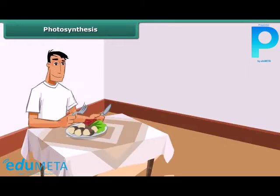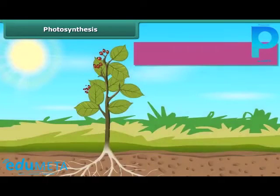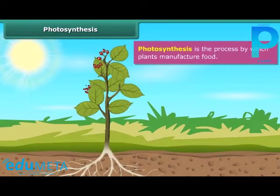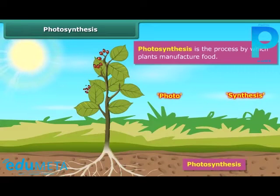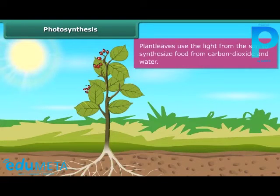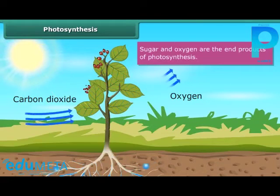Just as human beings need food to survive, plants also require food to live. Photosynthesis is the process by which plants manufacture food. The word photosynthesis is derived from two words: photo, which means light, and synthesis, which means preparation. Thus, photosynthesis means producing with the help of light. In this process, plant leaves use the light from the sun to synthesize food from carbon dioxide and water. Sugar and oxygen are the end products of photosynthesis.